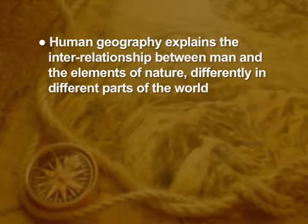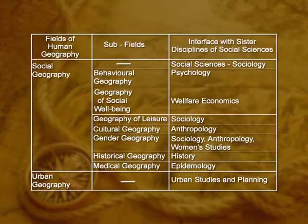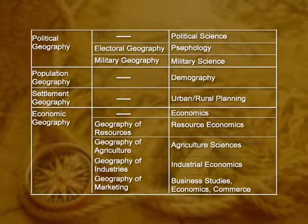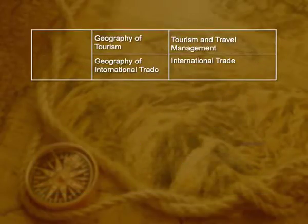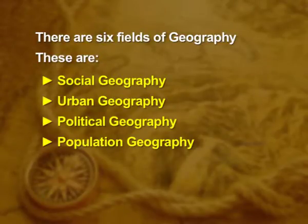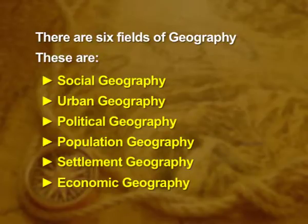Human geography explains the interrelationship between man and the elements of nature differently in different parts of the world. The given table reveals the expanding realm of human geography, covering its fields and sub-fields. There are six fields to be explored in forthcoming lectures: social geography, urban geography, political geography, population geography, settlement geography, and economic geography — each further divided into various sub-fields.